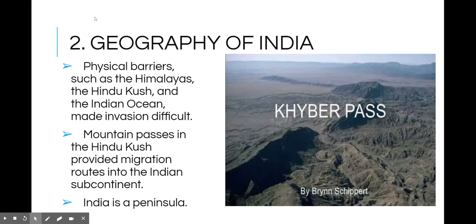Physical barriers such as the Himalayan Mountains, the Hindu Kush Mountains, and the Indian Ocean all made invasion of India very difficult. However, mountain passes in the Hindu Kush Mountains, such as the Khyber Pass, did allow people to migrate into the Indian subcontinent.